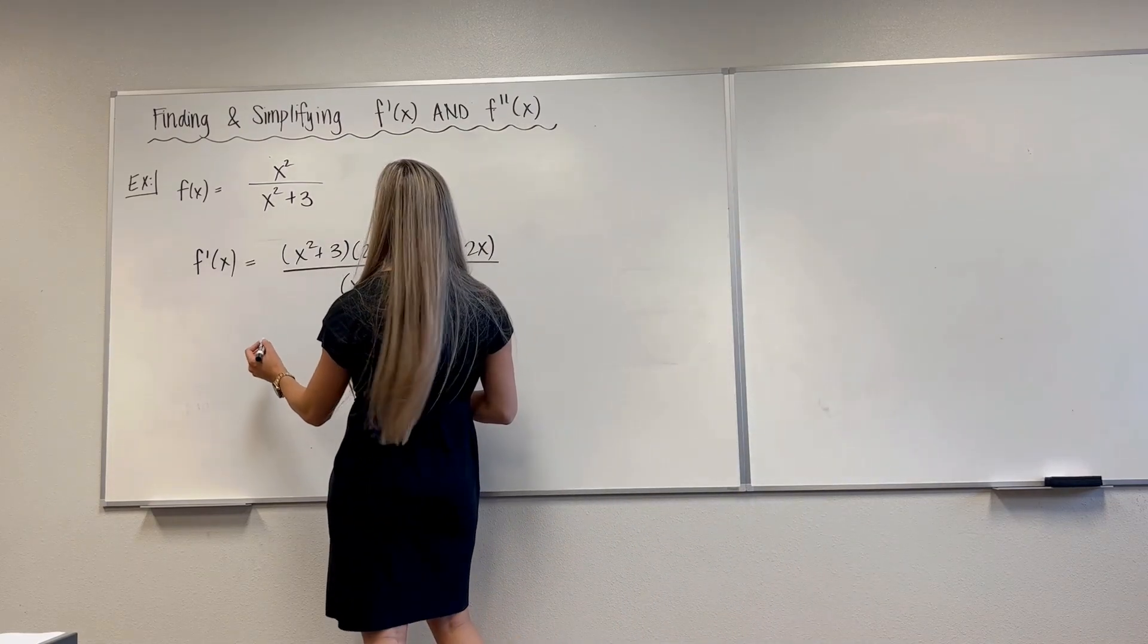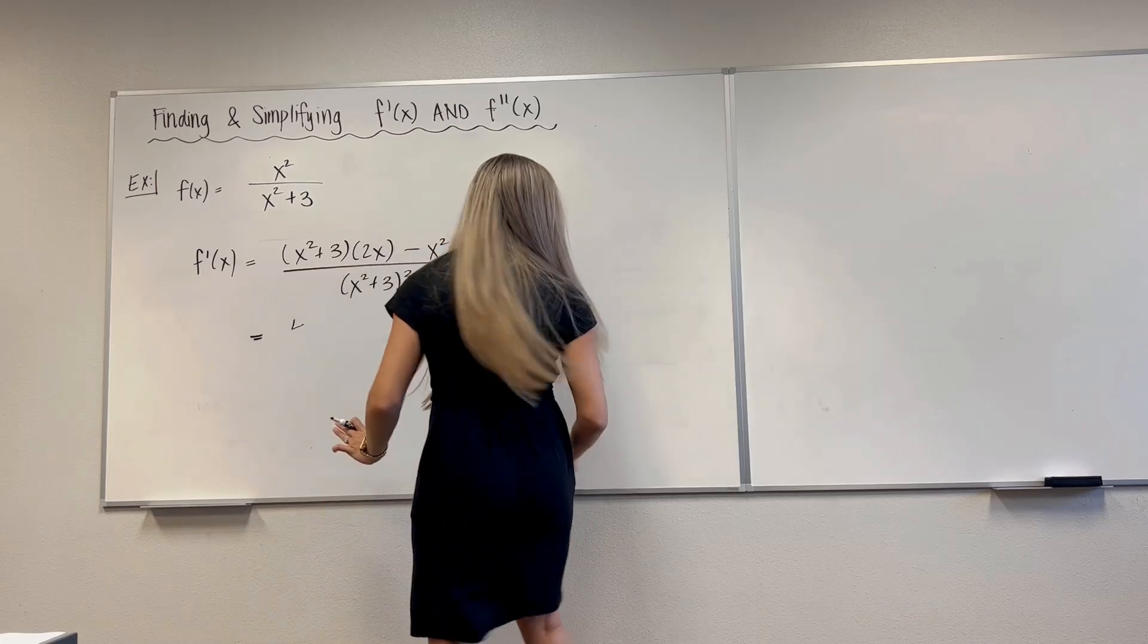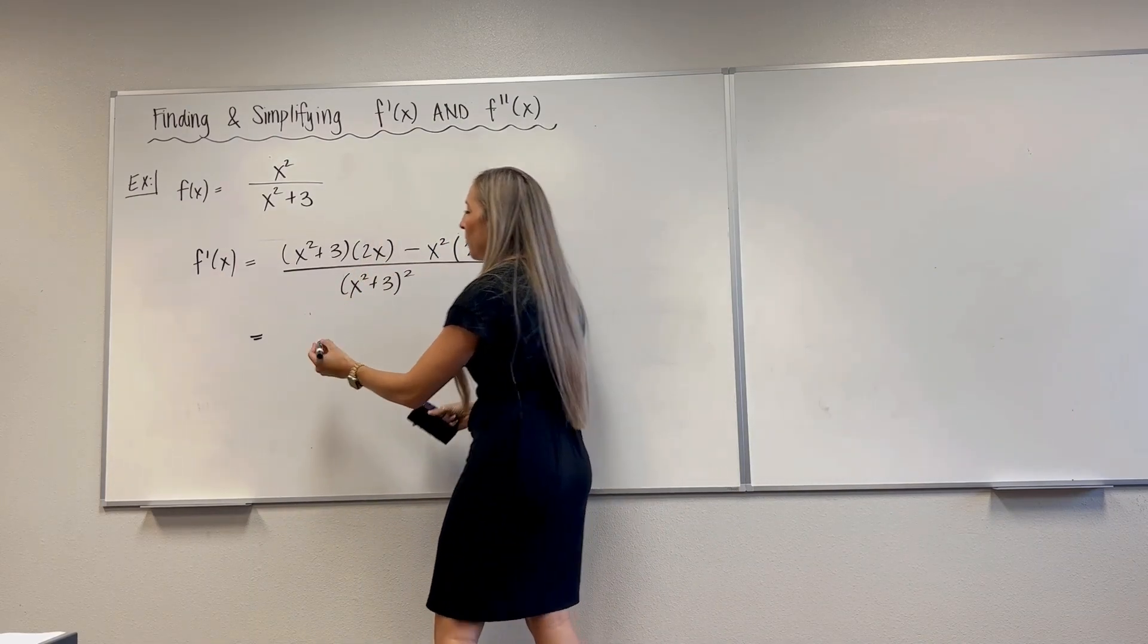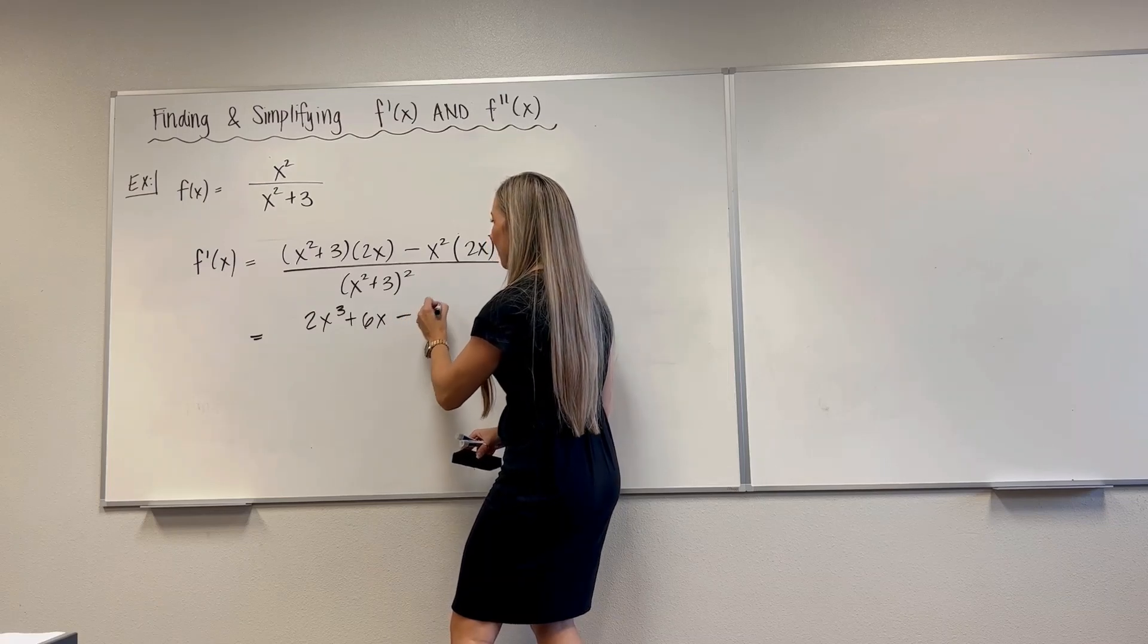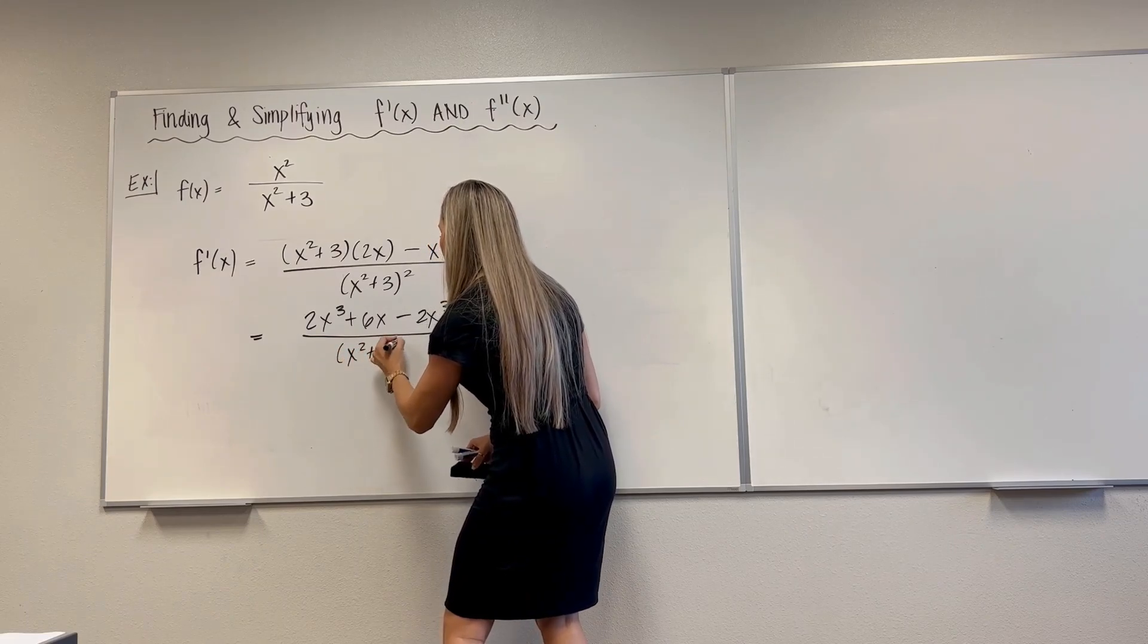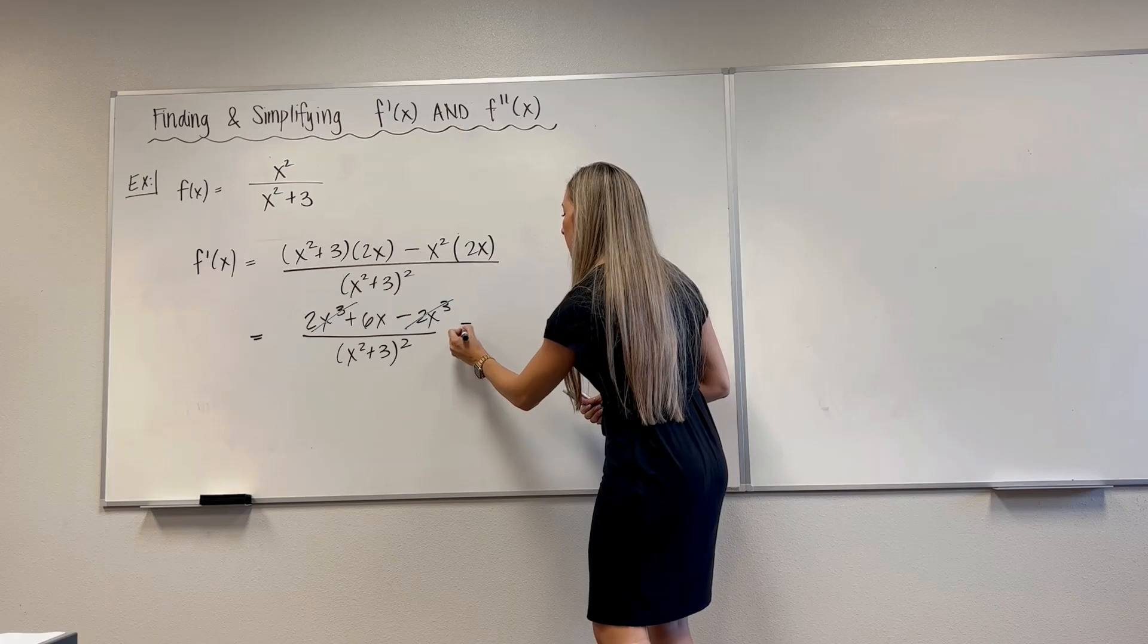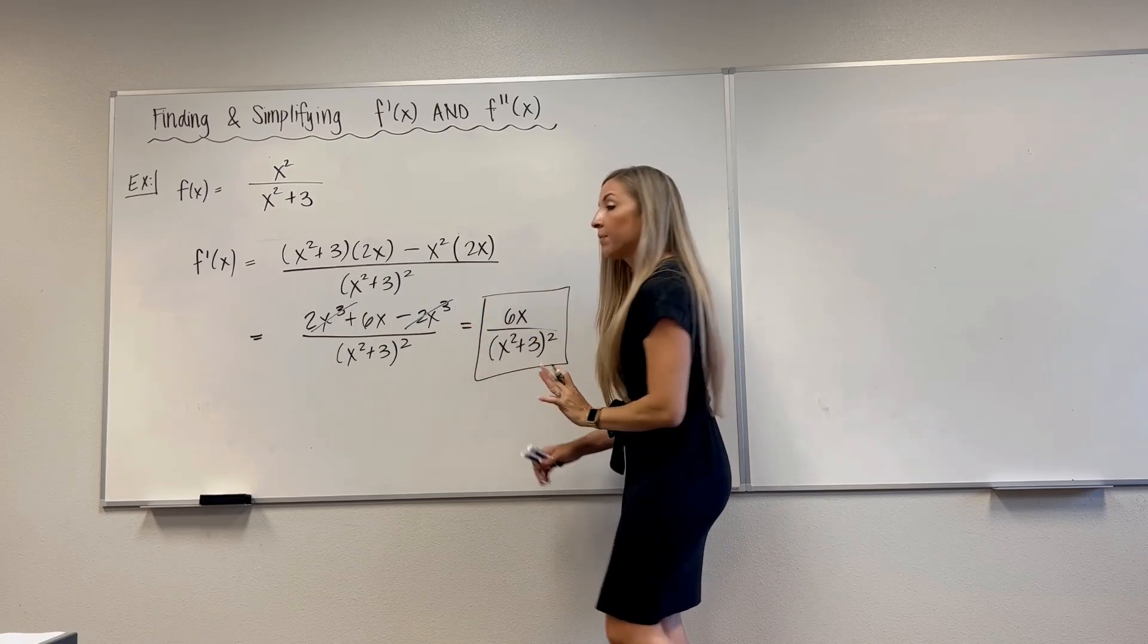f prime of x is going to be low d high, derivative of the numerator, derivative of x squared is 2x, minus high, d low is also 2x, because derivative of 3 is 0, over low, low, x squared plus 3 squared. Distribute. Let's clean up. So this is going to be 2x. You could factor out the 2x, but this one's not so obscene that I would do it. So 2x cubed plus 6x minus 2x cubed, over x squared plus 3 squared. And then 2x cubed cancels out. And we're just left with 6x over x squared plus 3 quantity squared.